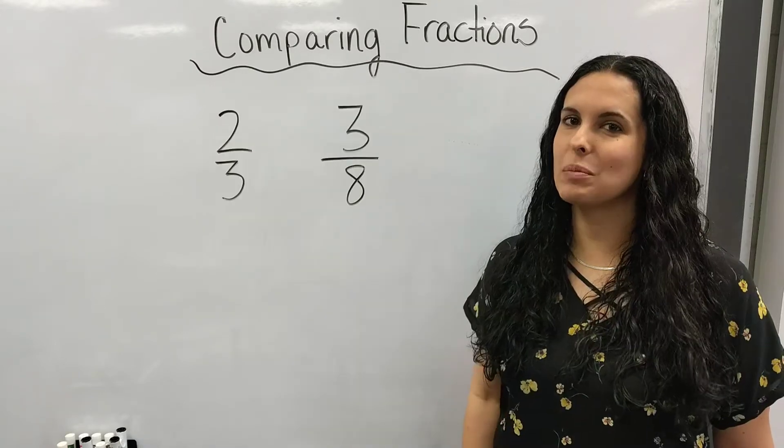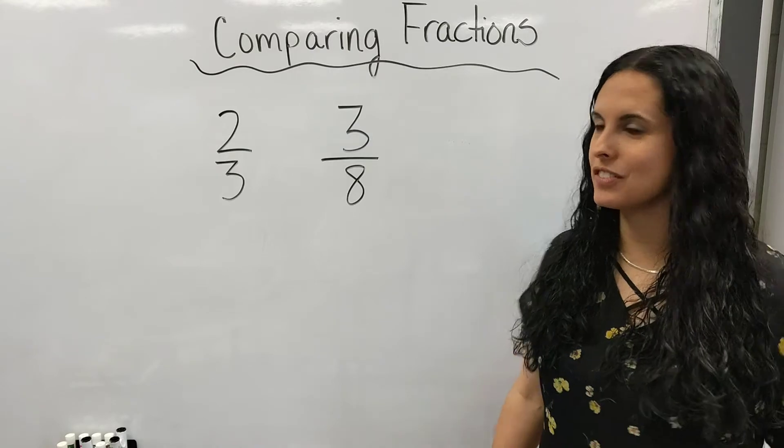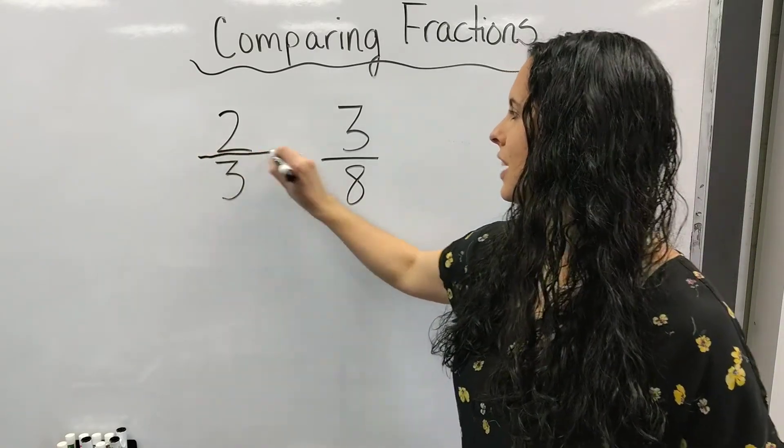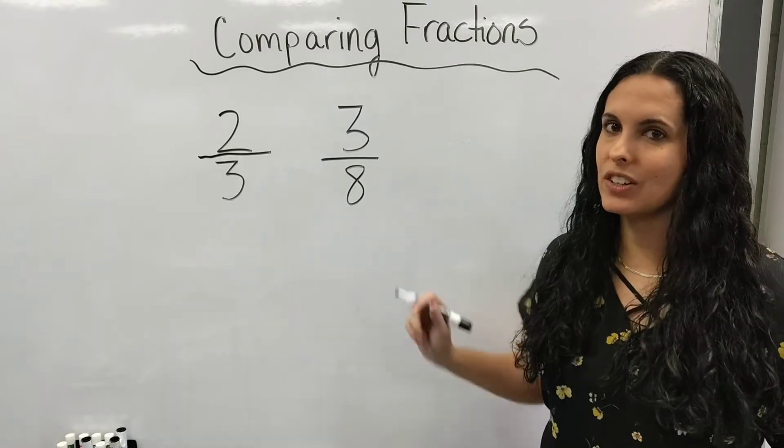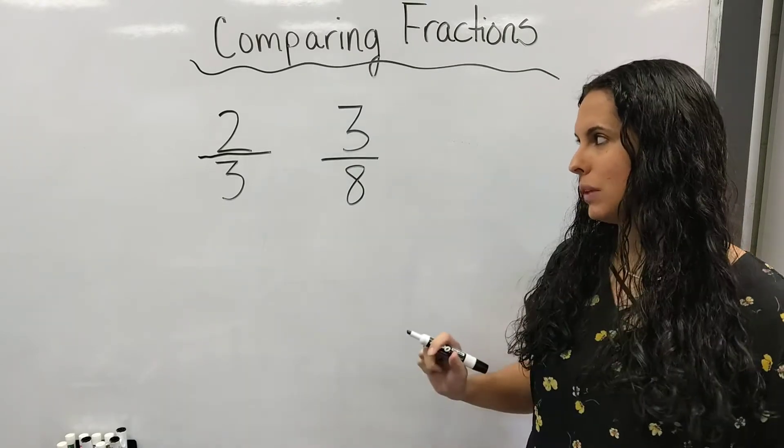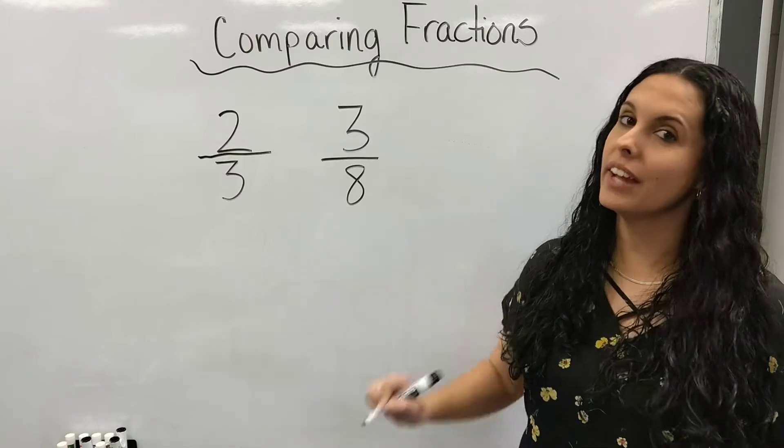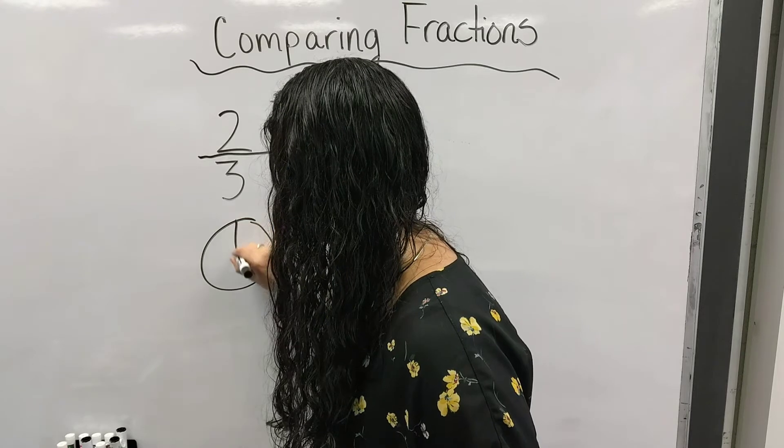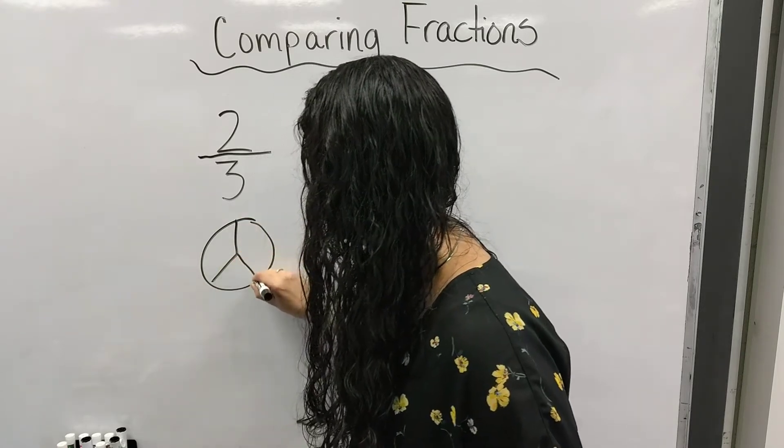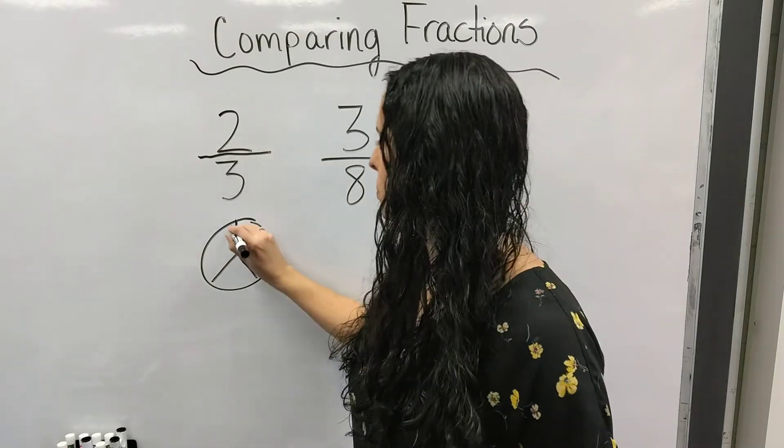Our last example is also an unlike denominator fraction. So I have two-thirds and three-eighths. They have different denominators. I cannot tell which one's bigger by looking at it. I'm going to go ahead and draw my fractions. This is what I want you to do at home. I'm going to break this up into thirds, and I need to shade in two pieces.